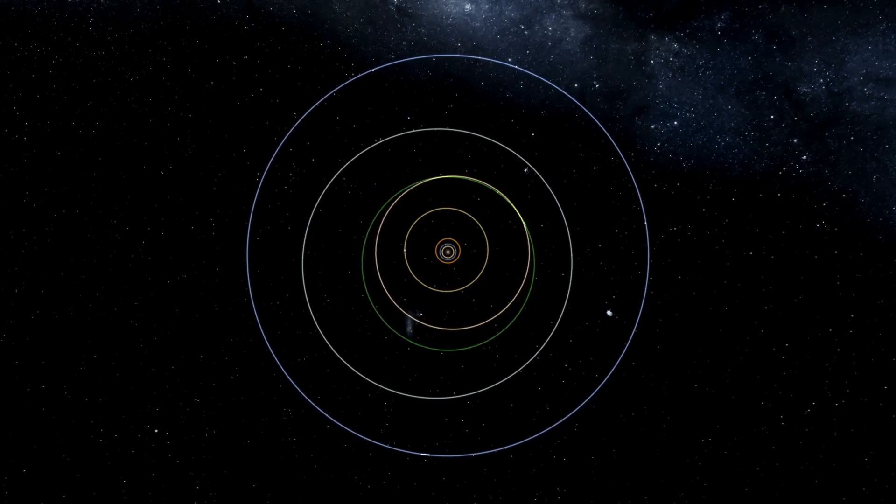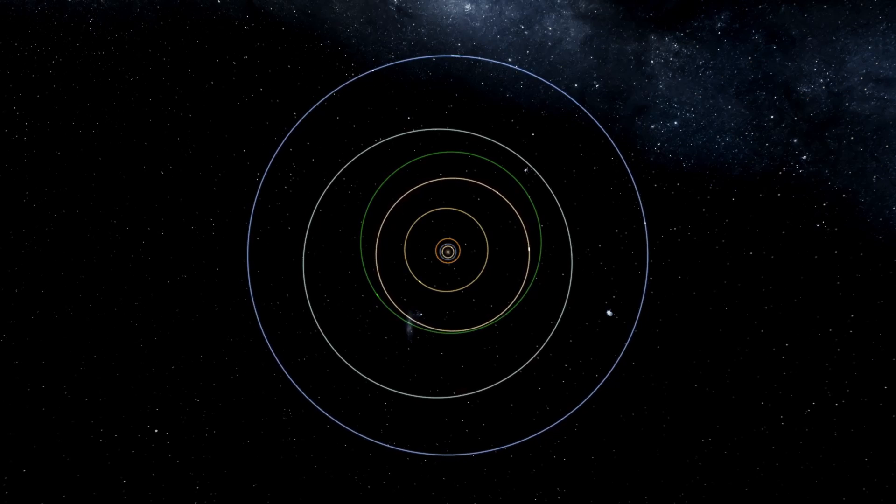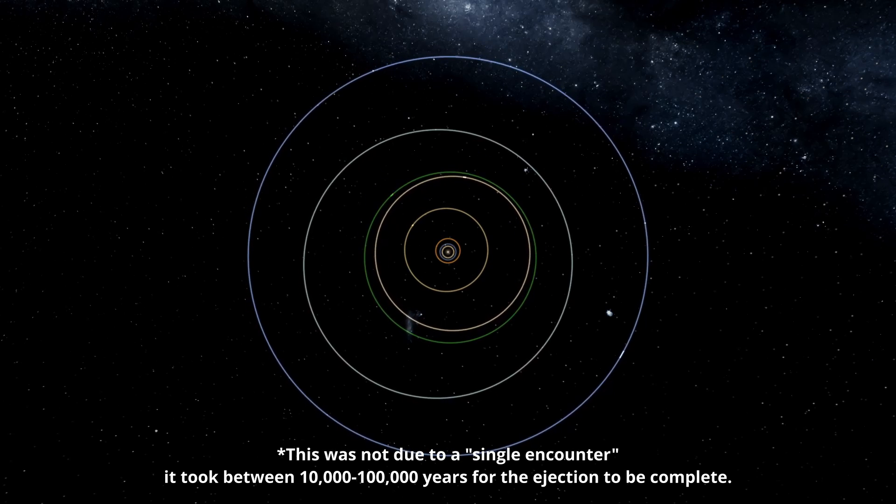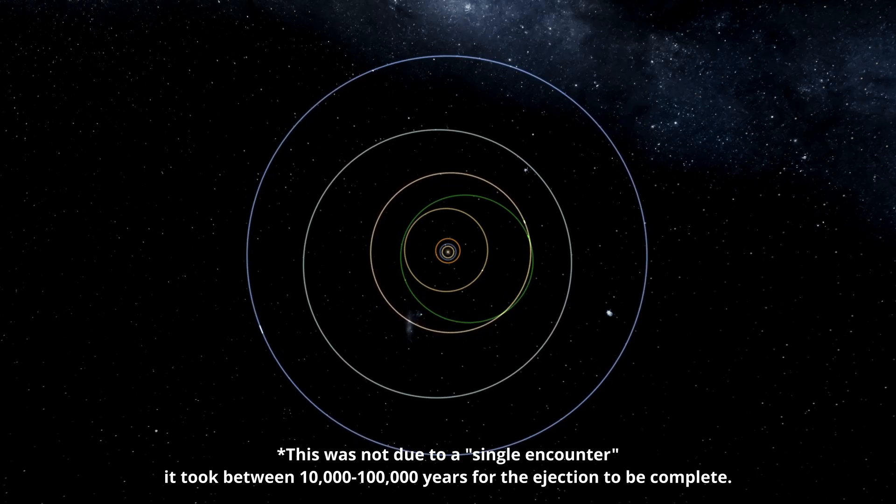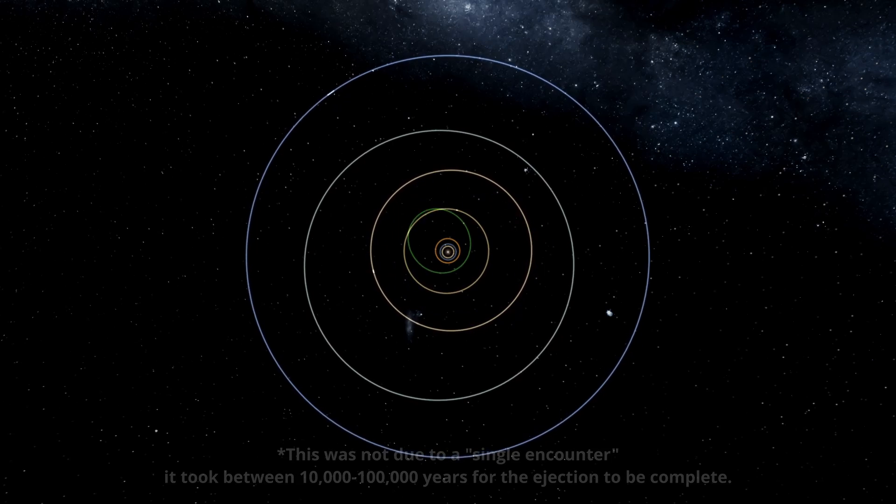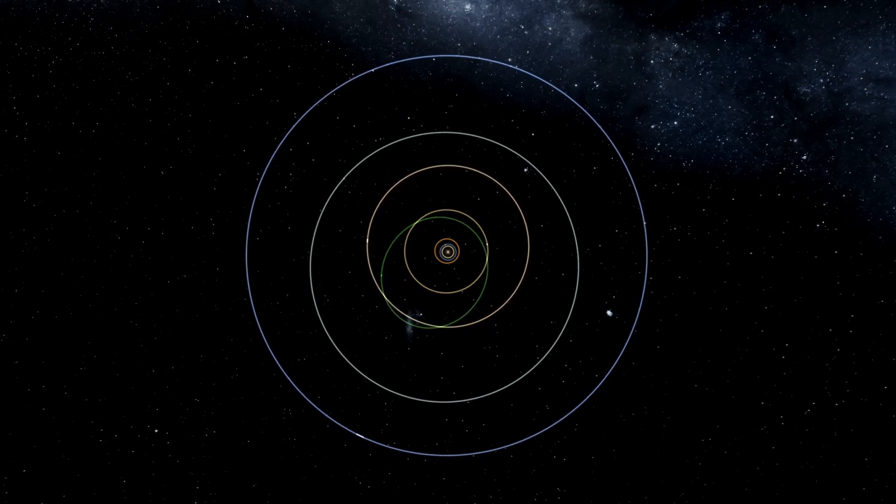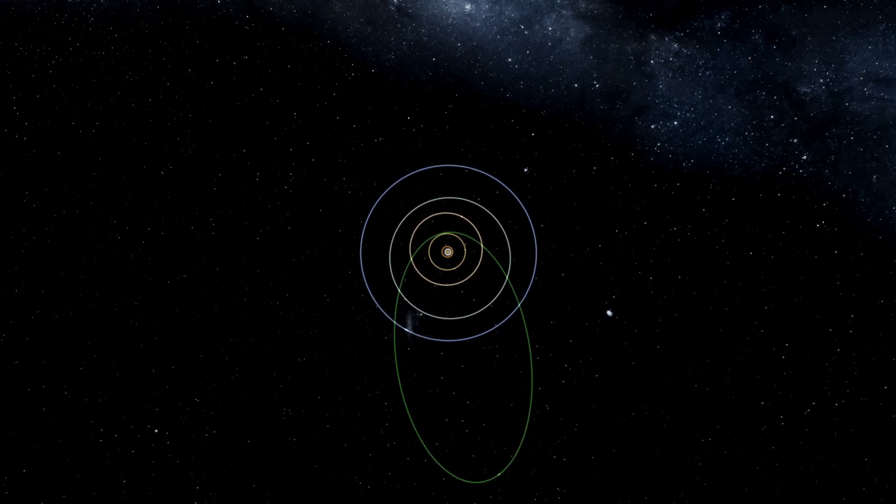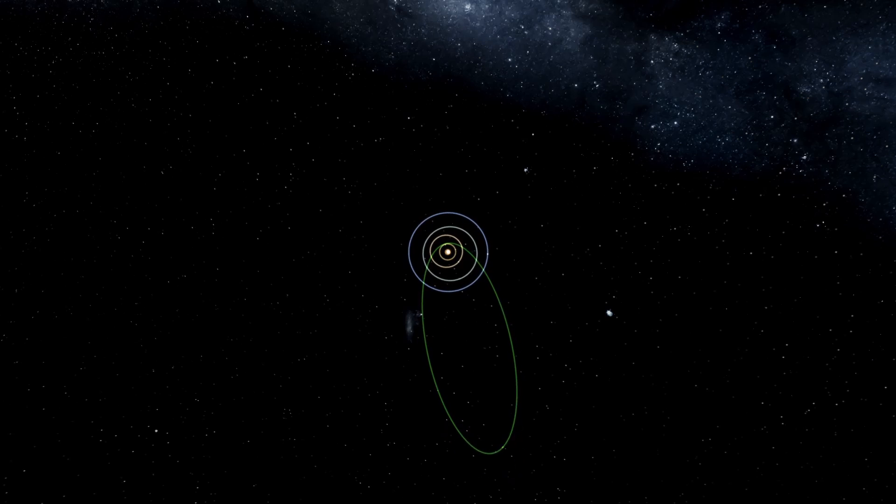Saturn started to disrupt the orbit of the fifth giant, with them crossing orbits with each other. Eventually an encounter between the two caused the fifth giant to be propelled inwards, making its orbit very elliptical and crossing the orbit of Jupiter. An encounter with Jupiter then ejected the fifth giant into interstellar space, becoming a rogue planet.